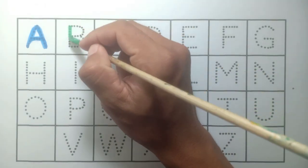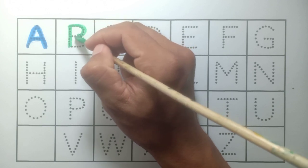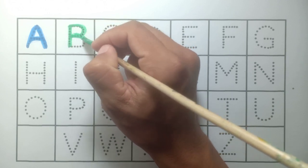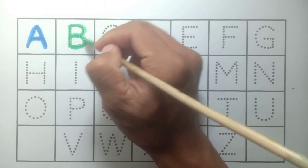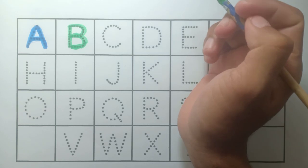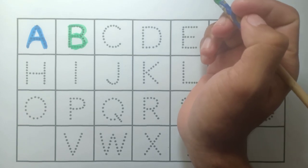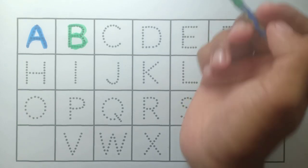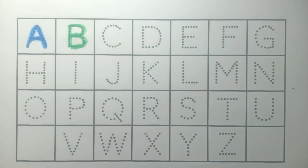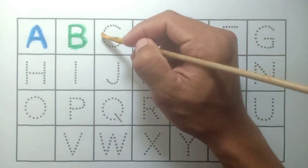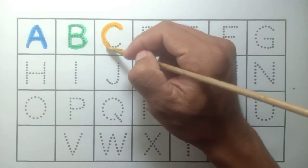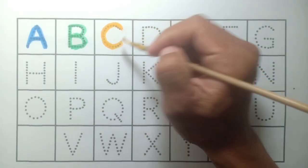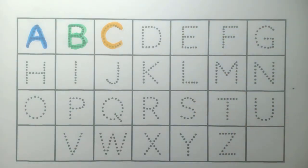And B, B for ball, green color. And C, C for cat, yellow color.